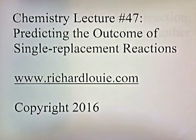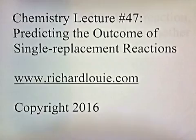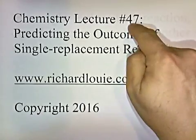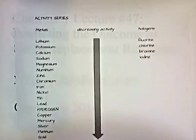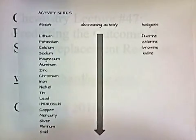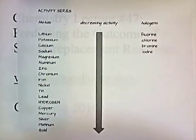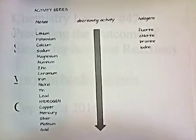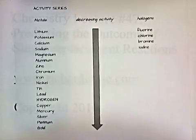Chemistry lecture number 47: predicting the outcome of single replacement reactions. Before we start, you might want to go to this website and print out lecture number 47, because it has a chart we're going to use. You might find it handy to have this chart next to you to refer to as I explain how to do some of these questions.